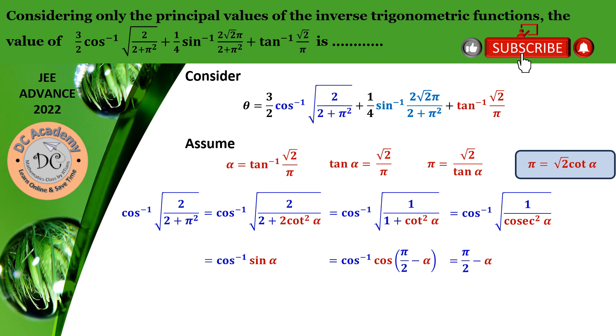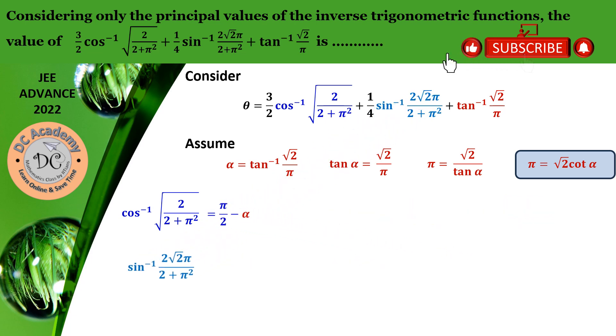Now let's go ahead. We consider the sin inverse term. In the same process as we simplified the cos inverse term, we replace pi by root 2 cot alpha. If we substitute that, in the denominator we have 2 plus 2 cot squared alpha and in the numerator we have 4 cot alpha. Therefore, 1 plus cot squared alpha will become cosec squared alpha.